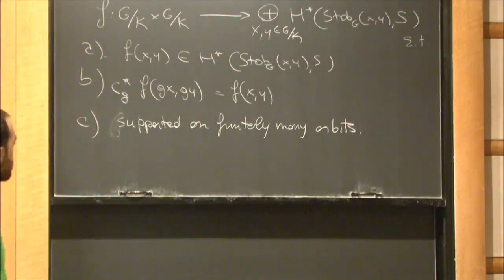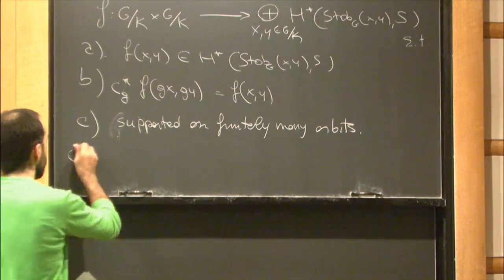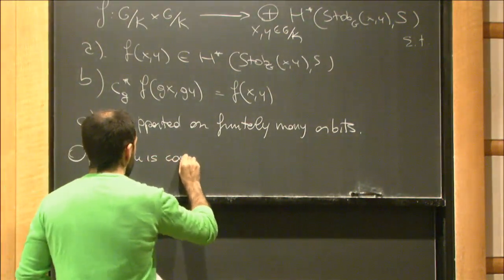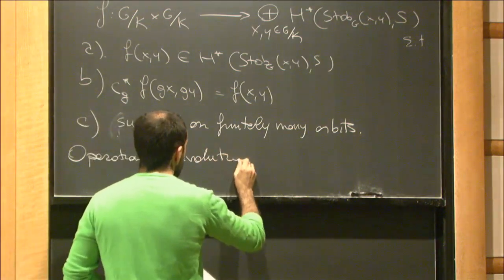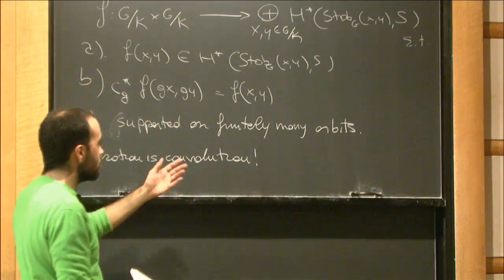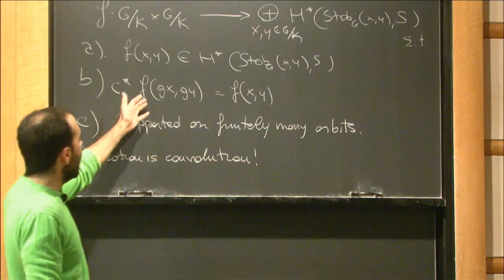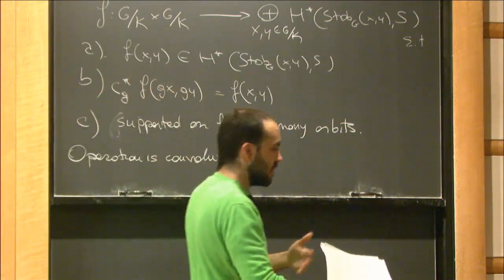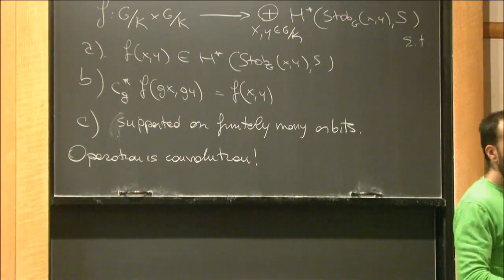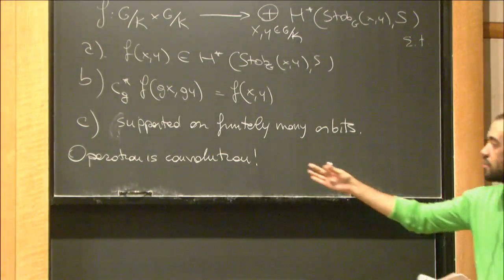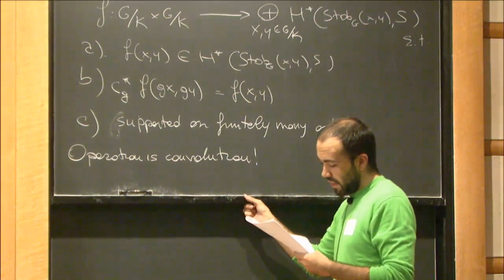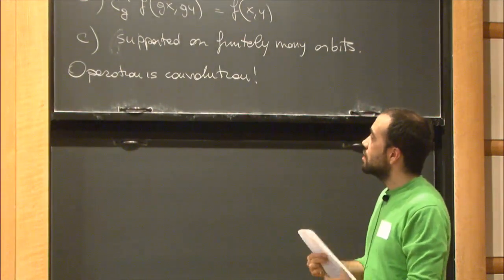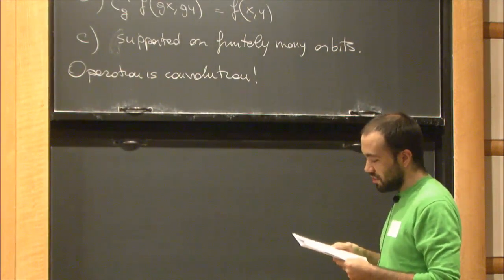Again, with this description, the operation is convolution — a special kind of convolution because the values of f at different pairs of points live in different cohomology groups. There will be a bunch of restriction and co-restriction maps to make sense of this convolution, but I'd rather not write down the formula because it gets a bit long.